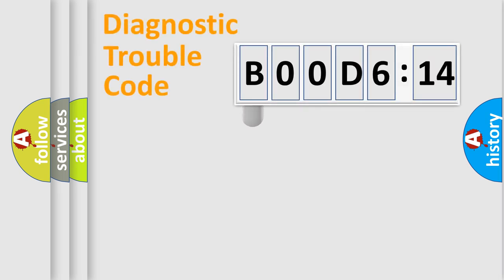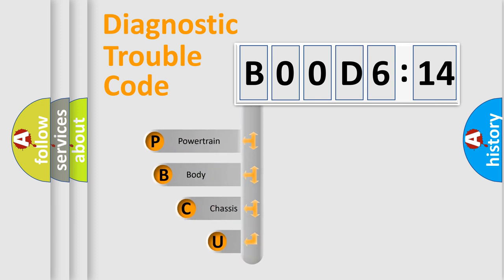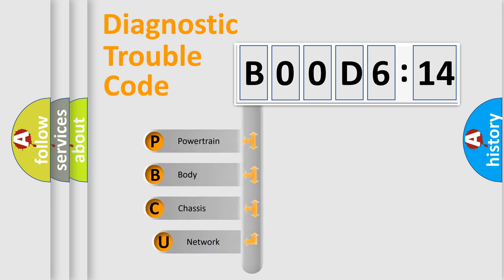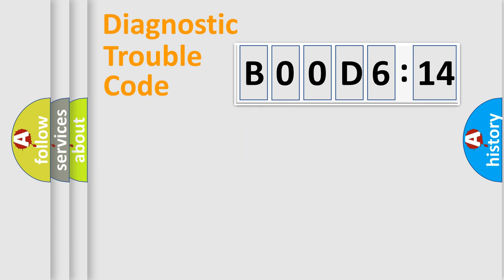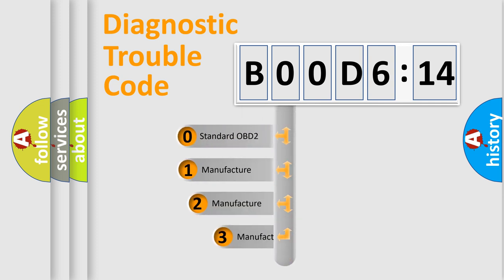First, let's look at the history of diagnostic fault code composition according to the OBD2 protocol, which is unified for all automakers since 2000. We divide the electric system of an automobile into four basic units: Powertrain, Body, Chassis, and Network. This distribution is defined in the first character of the code.